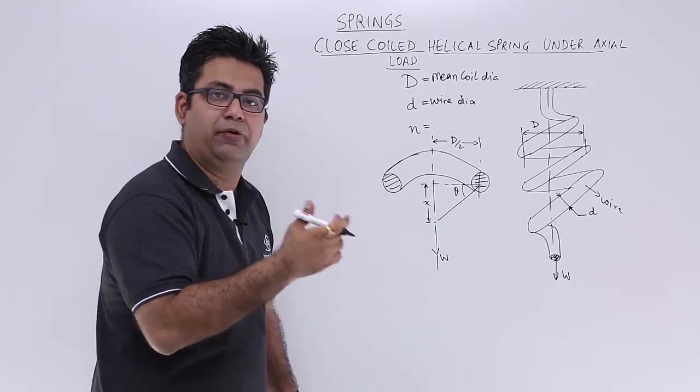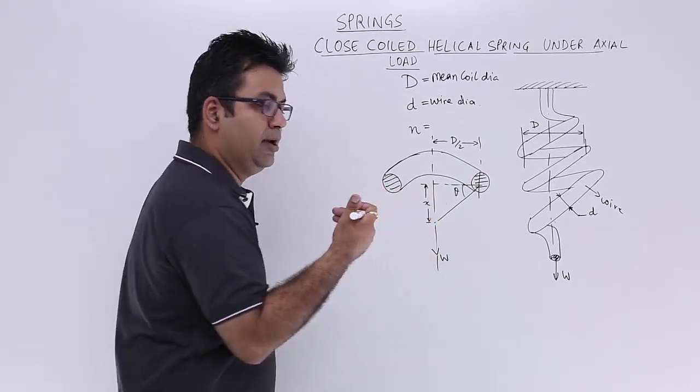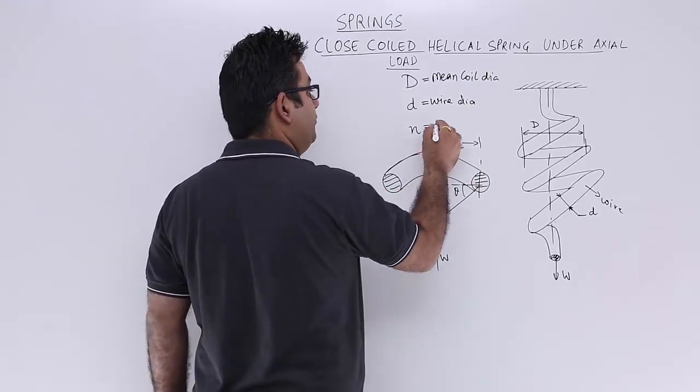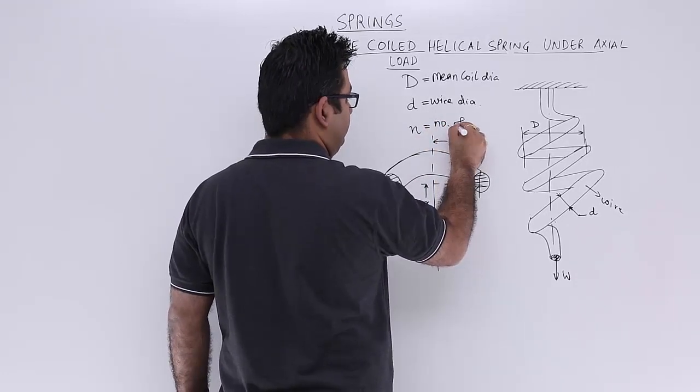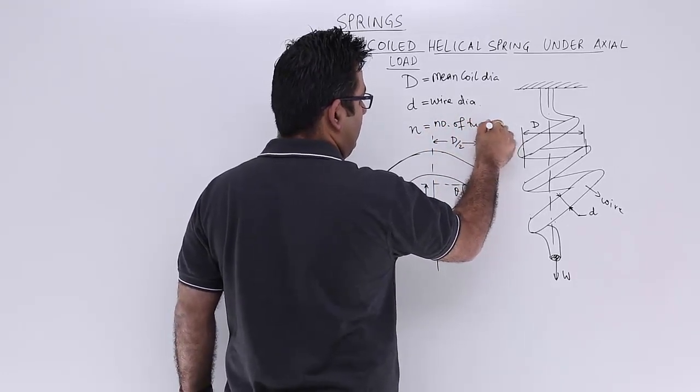And then you have n which is the number of turns of this wire to create the coil. So number of turns.